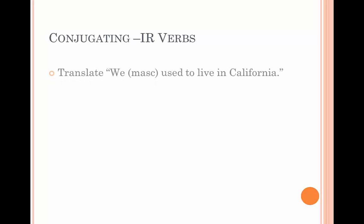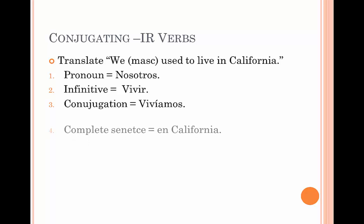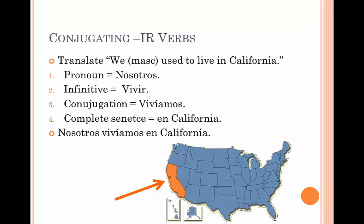So here we'll run through an example. We have to translate 'we,' the masculine form, 'used to live in California.' We take the pronoun nosotros, and the infinitive for the word to live is vivir. When conjugating this verb, we get vivíamos. And completing the sentence is en California. So the complete sentence is nosotros vivíamos en California.